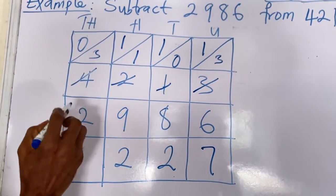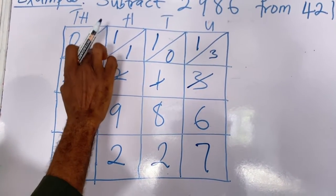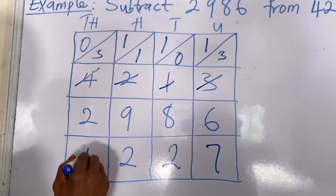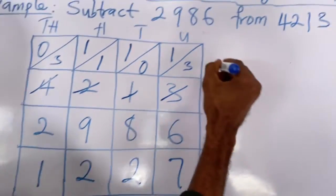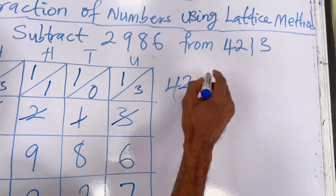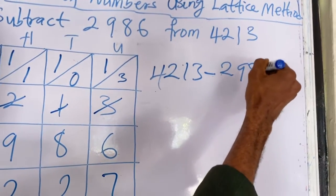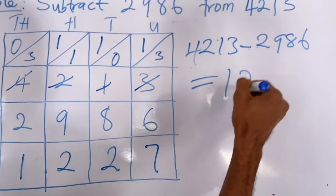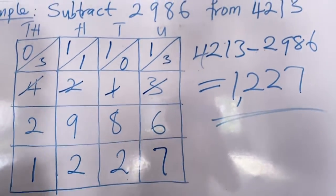Here it becomes 0 because that is what is left. We are left with 3 here. 3 minus 2 gives you 1. So at the end of the day, when I subtract 4213 minus 2986, it will give me equal to 1227. That is the answer.